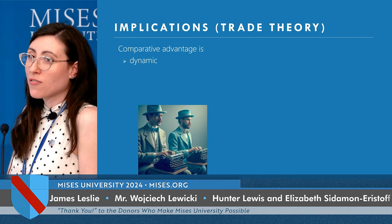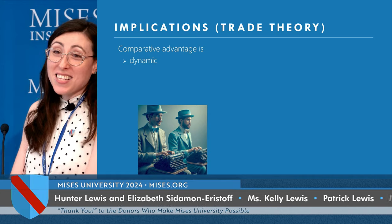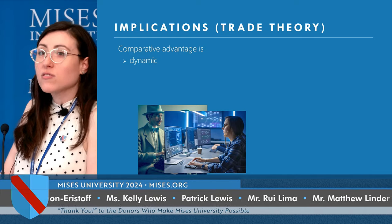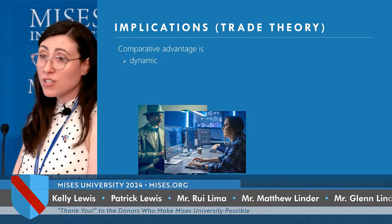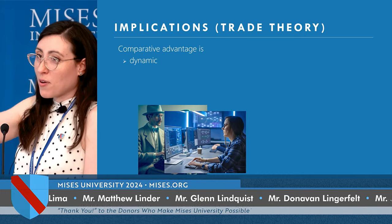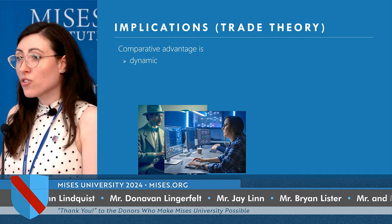Jobs have changed — we used to use typewriters, now we use computers, and eventually we may use generative AI. During that process, a lot of jobs will disappear and a lot of jobs will appear. I may have had a comparative advantage in being a typist that is no longer true a couple of decades later. The pattern of division of labor and where comparative advantage lies for each individual, entrepreneur, and firm is really a very dynamic process — as dynamic as the market itself.